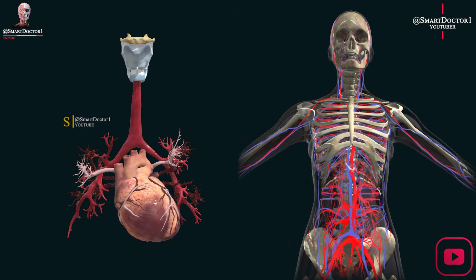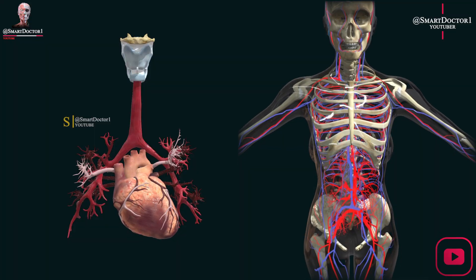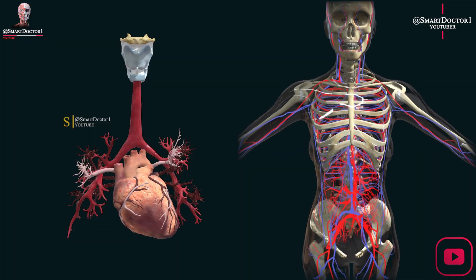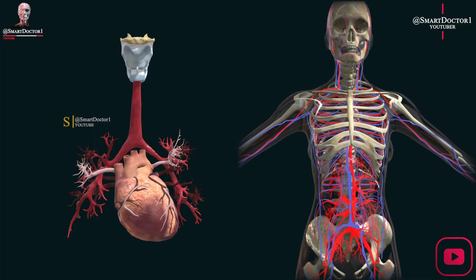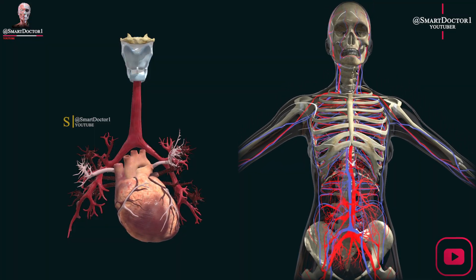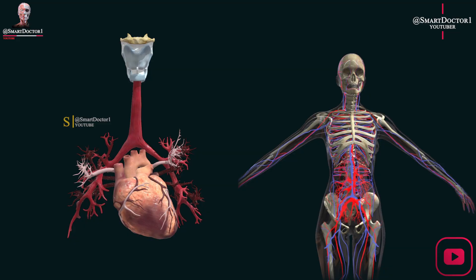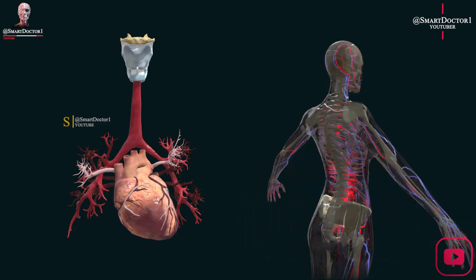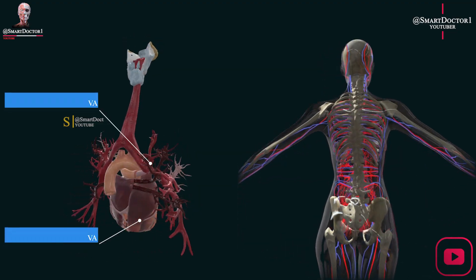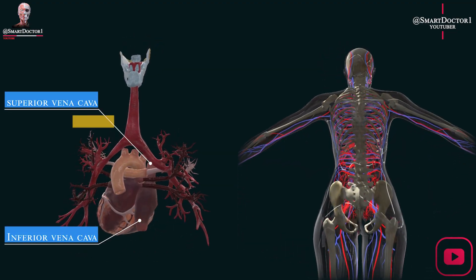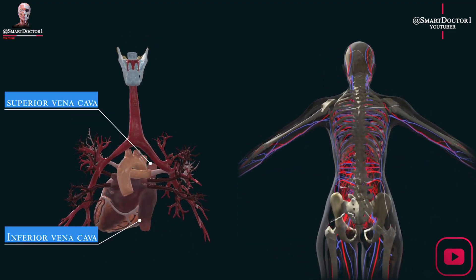After oxygen and nutrients are exchanged with the cells, the deoxygenated blood returns to the heart through veins, such as the superior and inferior vena cava.